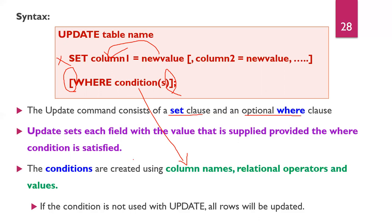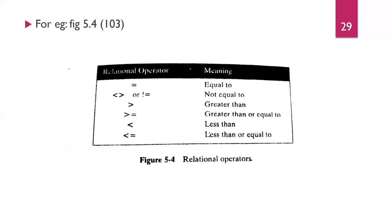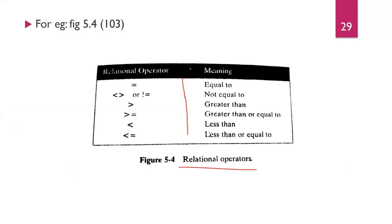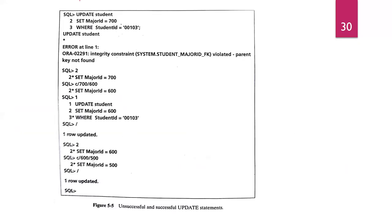If no WHERE condition is used, all rows in the table are updated. The conditions are created using column names, relational operators, and values — these are the same relational operators you already know from programming languages. The slide shows both a successful and an unsuccessful update statement example.